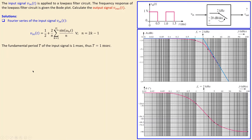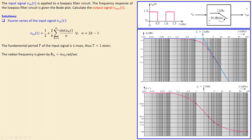For the fundamental frequency and fundamental period, we determine these from the given graph of Vin. The fundamental period T is 1 ms. The radian frequency is given by the general expression: omega sub n equals n times the fundamental frequency in radians per second. Omega 0, the fundamental radian frequency, is 2 pi divided by the period, which gives 2000 pi radians per second.